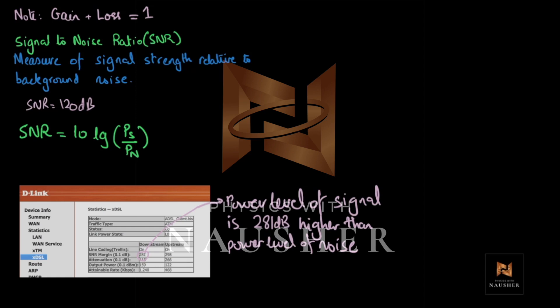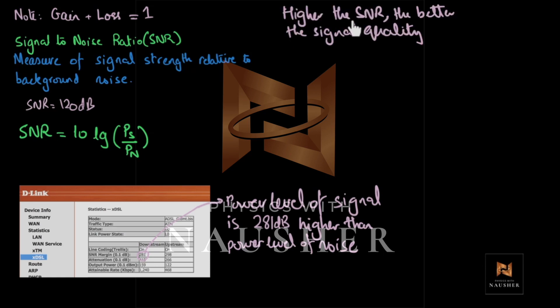Similarly, upstream SNR of 29.8 decibels means the upstream signal is 29.8 decibels higher than the upstream noise. Basically, the higher the SNR — the higher that number — the better the signal quality, because that shows how far above background noise you are. If it's 280 decibels, you're 280 decibels above noise, which is better.